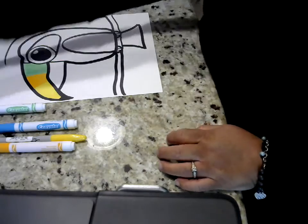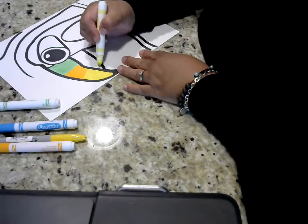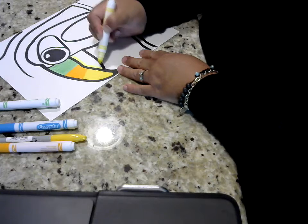And then let's see, we'll color this bottom part right here, a little bright yellow for his beak.